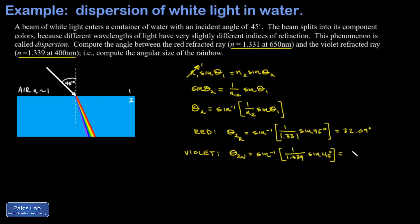and we do a similar calculation for the violet light. When I run the numbers on this I get 31.88 degrees. So I can see in the way this turned out the angle for red is bigger. Remember angles are